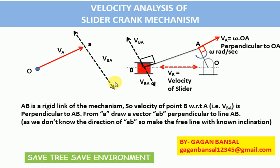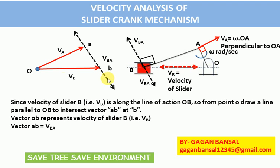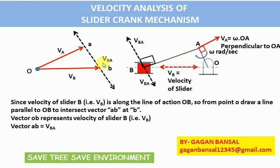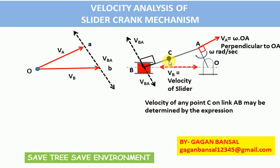The velocity of point B with respect to O, that is VB, is along the line of action of OB. So from point o, draw a horizontal straight line which meets the vector AB at point B. This oB represents the velocity of the slider, and AB represents the velocity of point B with respect to A. So the triangle oAB is the required velocity triangle.